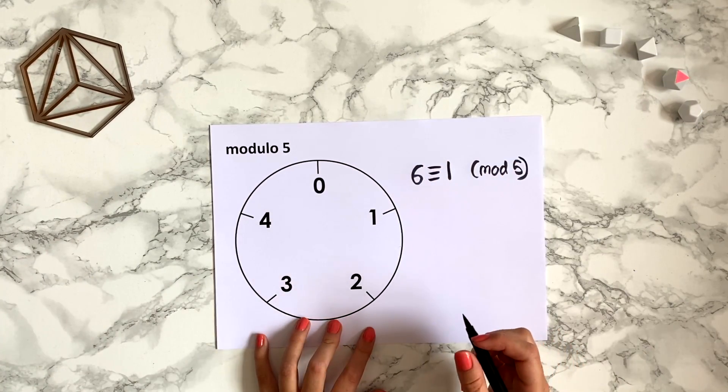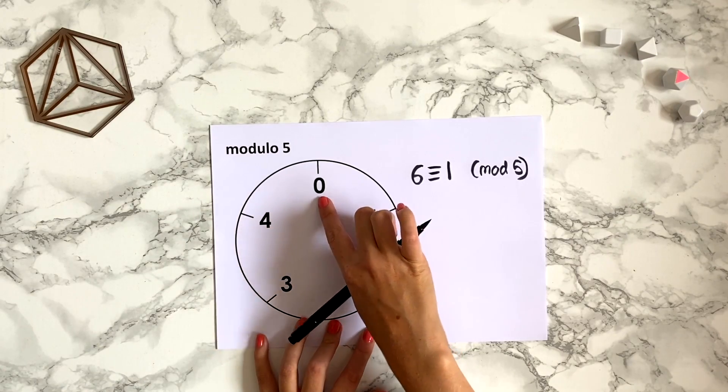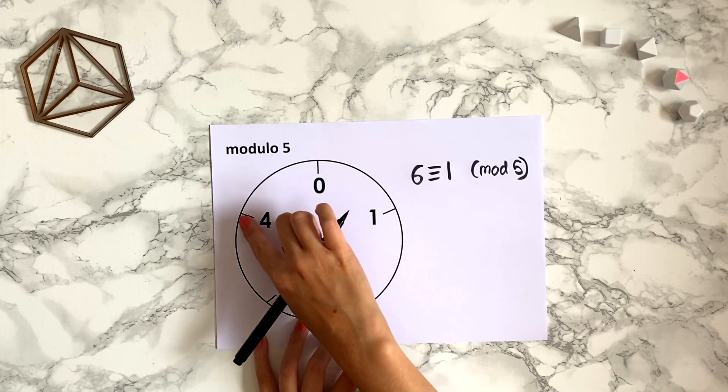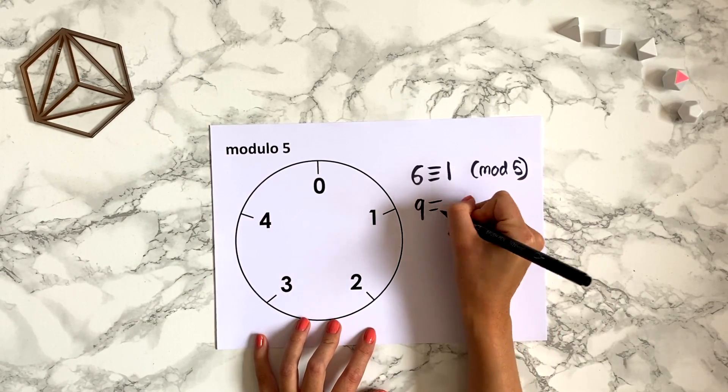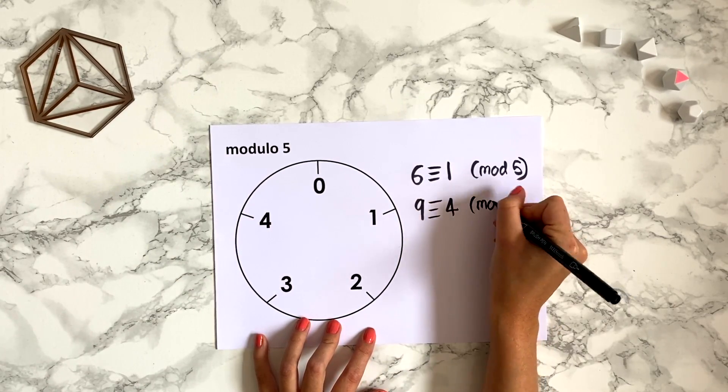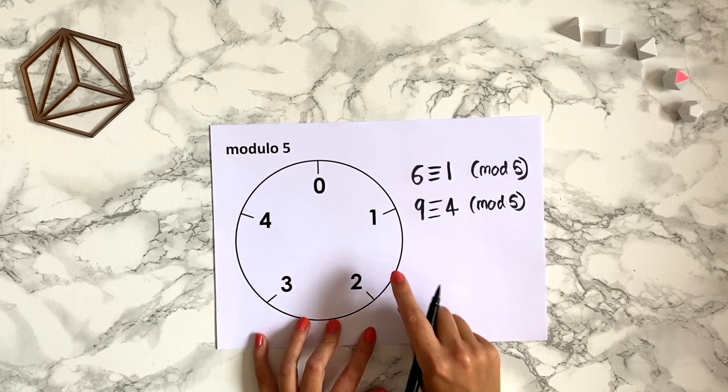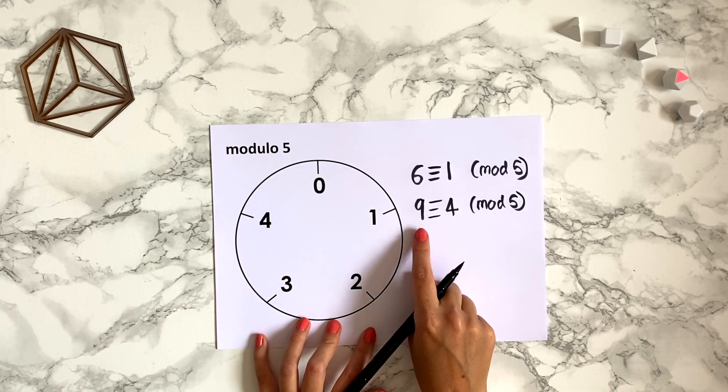How about 9 o'clock? Well 5 would be here, so 6 is here, 7, 8, 9, so 9 is the same as 4 o'clock, or 9 is congruent to 4 modulo 5. And again you can note that the remainder when you divide 9 by 5 is 4.